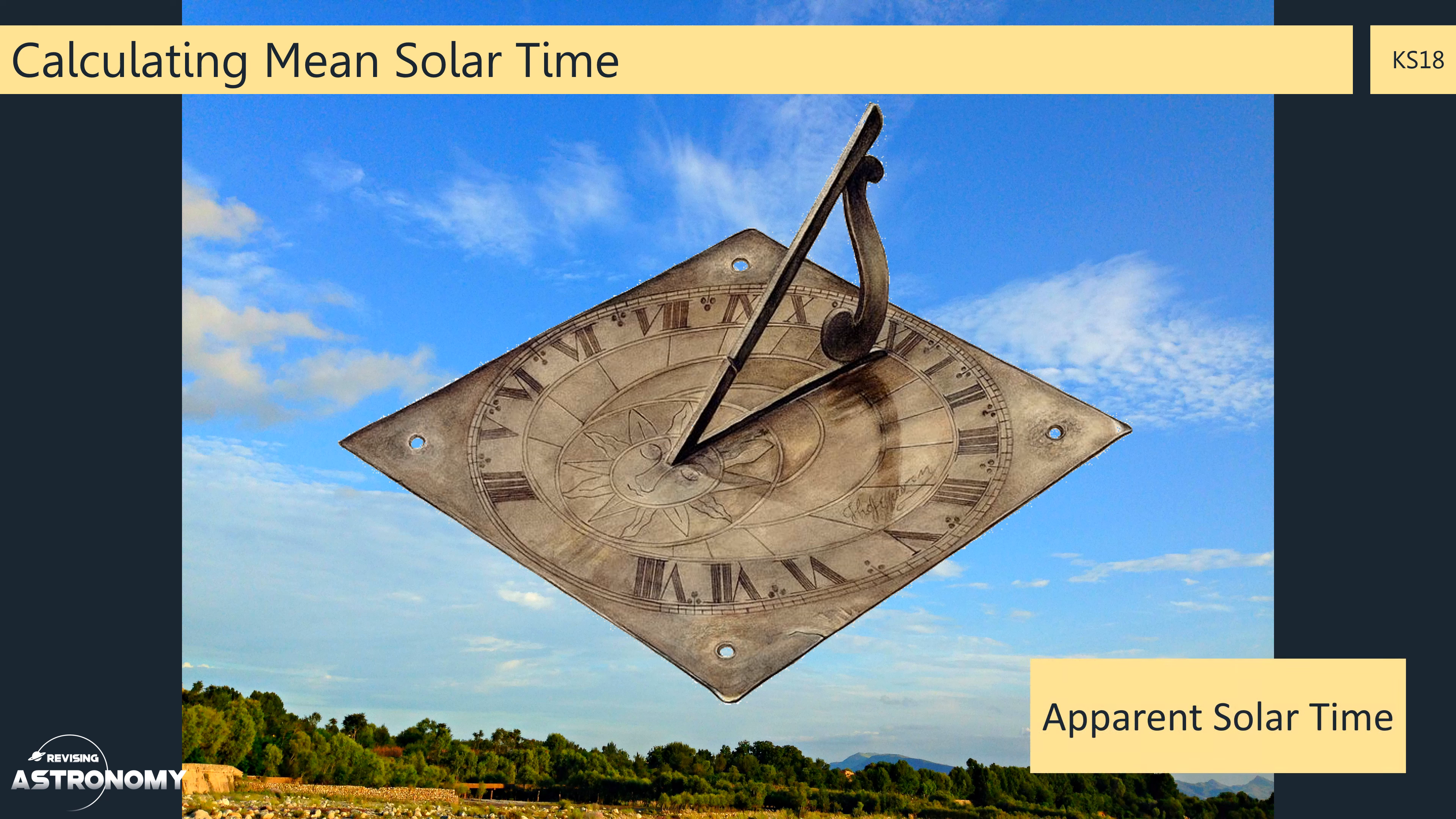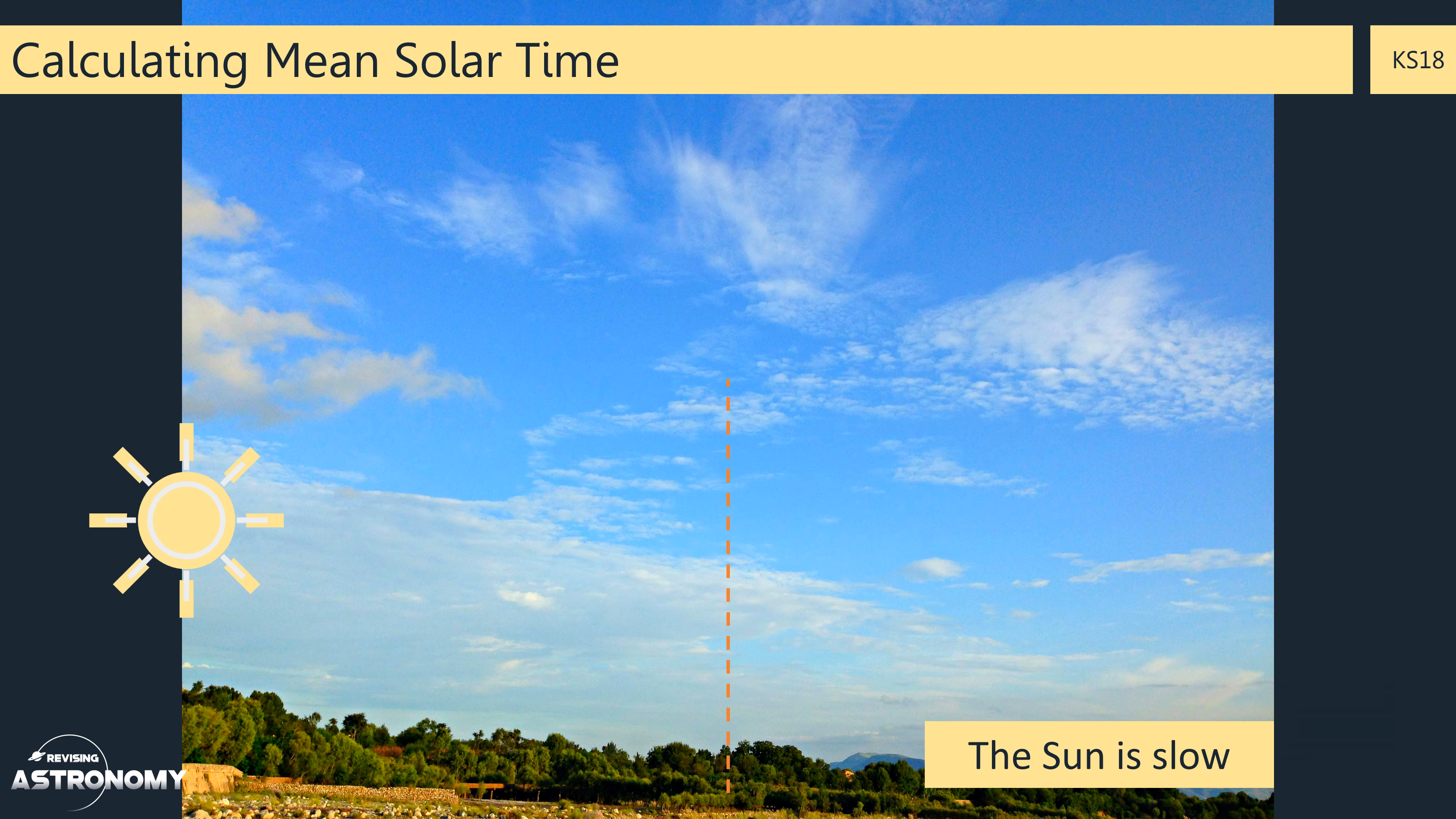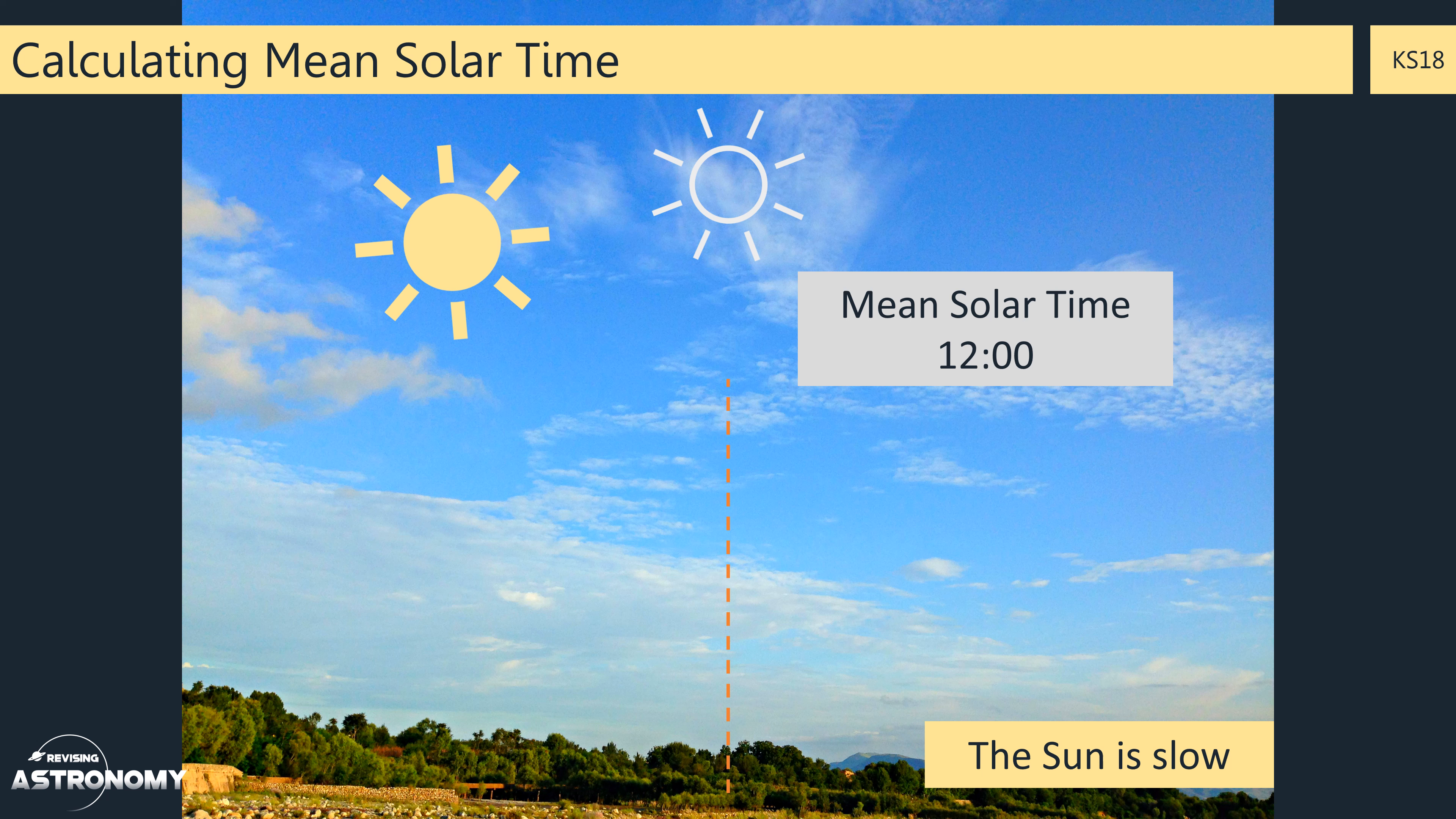So let's consider these different scenarios. Here the Sun appears slow. This means that when the mean Sun is at the highest point, a mean solar time of 12, the actual Sun in the sky has not reached the highest point. In this example, if you looked at a sundial at this location, it would tell you that the time is actually 11:54. And this is called the apparent solar time.